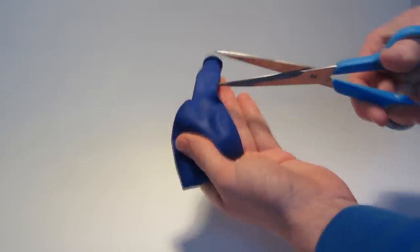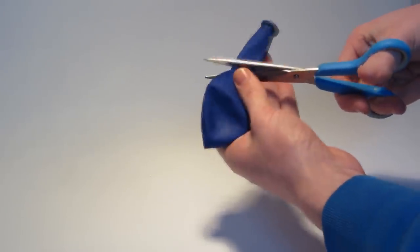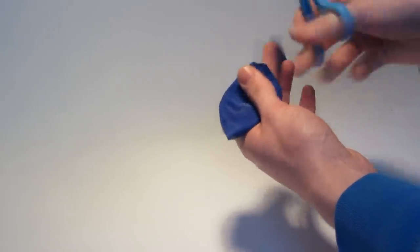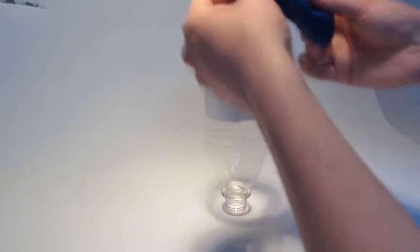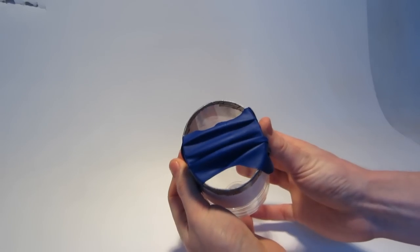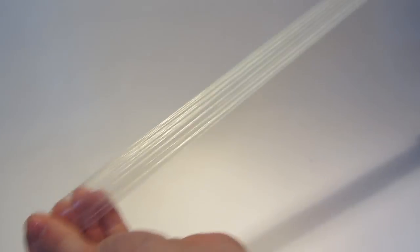Now take a balloon and cut off the long part. Spread it out and tape it over the bottle. Of course you can use other flexible materials.